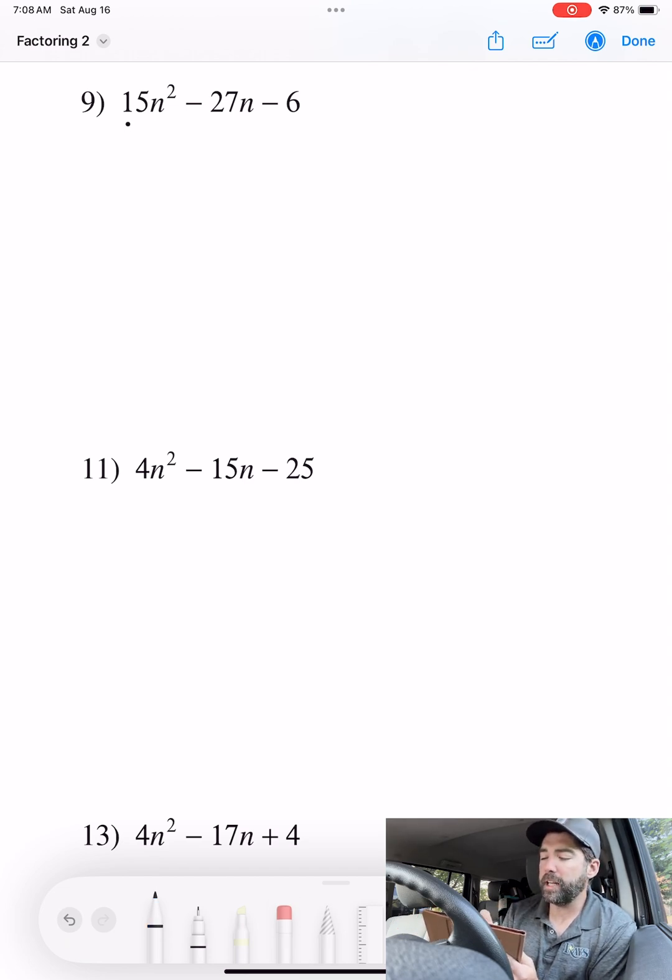We got 15, negative 27, and negative 6. So if we take a 3 out of all this, I'm left with 5n squared minus 9n. 6 divided by 3 is minus 2.